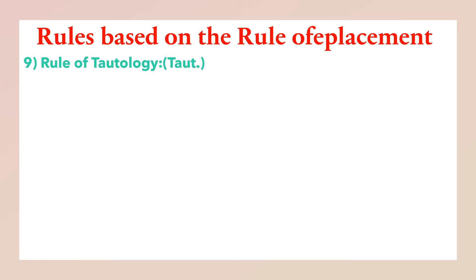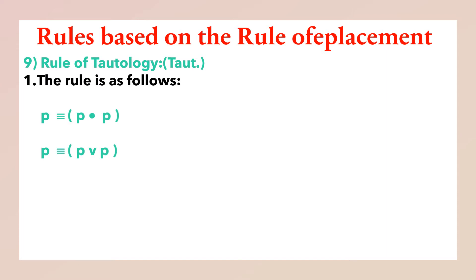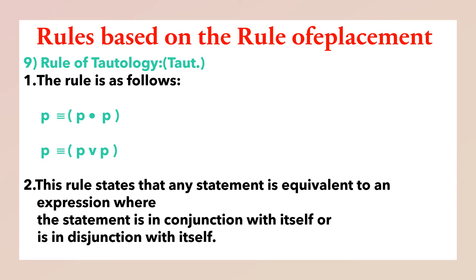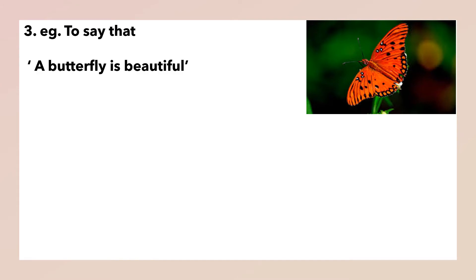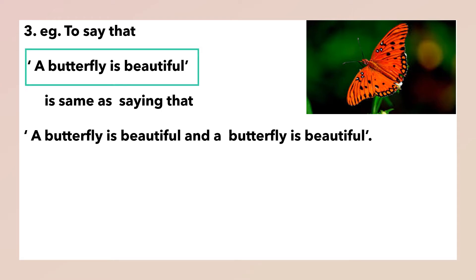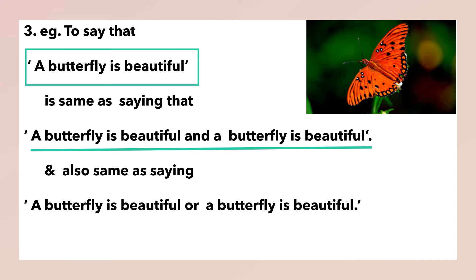The 9th is the rule of Tautology (TAU). The rule is as follows: P is equivalent to P and P, or it is also equivalent to P or P. This rule states that any statement is equivalent to an expression where the statement is the conjunction with itself or its disjunction with itself. For example, saying 'a butterfly is beautiful' is the same as saying 'a butterfly is beautiful and a butterfly is beautiful,' and also the same as saying 'a butterfly is beautiful or a butterfly is beautiful.'